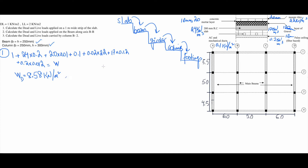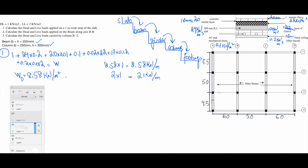So the total dead load on the slab for a 1-meter strip is 8.58 × 1 = 8.58 kilonewton per meter. Same for the live load: 2 × 1 = 2 kilonewton per meter. Note that this is a one-way slab.